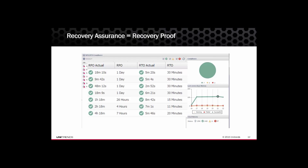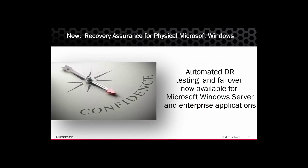With 9.0, we will also be releasing new functionality for Recovery Assurance. Previous versions only worked with virtualized environments — only VMware or Microsoft Hyper-V based applications were supported. With 9.0, Unitrends is the first in the industry to automate recovery testing and failover for physical Windows environments, including critical Microsoft applications like SQL and Exchange at the guest level. Only Unitrends can validate recovery for a complete heterogeneous, multi-tier application across your infrastructure. This is available for free with Unitrends Enterprise Backup Enterprise Plus edition, or can be purchased separately for Recovery Series appliances.